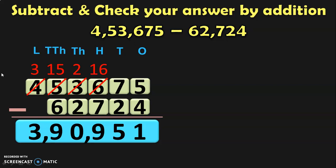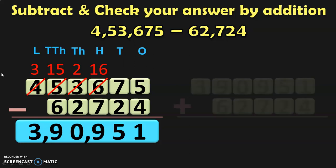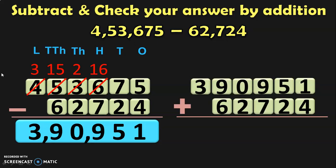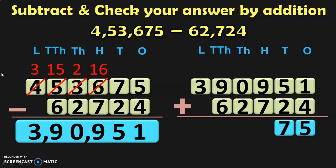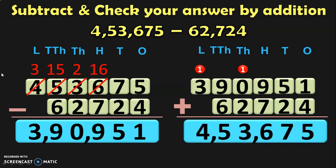Next, check your answer by addition. You add the answer 3,90,951 to the smaller number 62,724. When you perform this addition, you should get the bigger number 4,53,675. Begin the addition from the ones place: 1 plus 4 is 5. 5 plus 2 is 7. 9 plus 7 is 16 — write 6 carry over 1. 1 plus 0 is 1, plus 2 is 3. 9 plus 6 is 15 — write 5 carry over 1. 1 plus 3 is 4. The answer is 4,53,675, which is the bigger number, confirming the subtraction is correct.